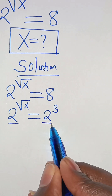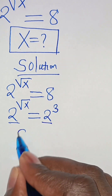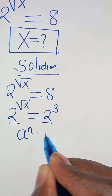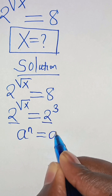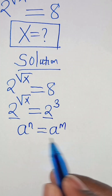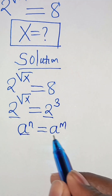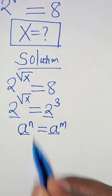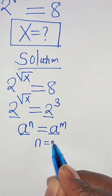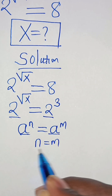Since the bases are common here, that is a to the power of n, this is equal to a to the power of m. Since the bases are common, exponent n is equal to m.